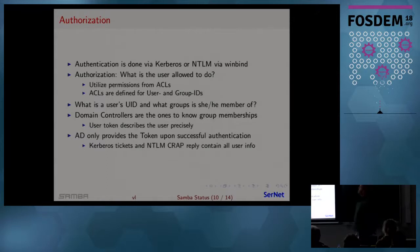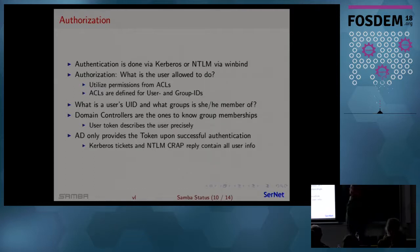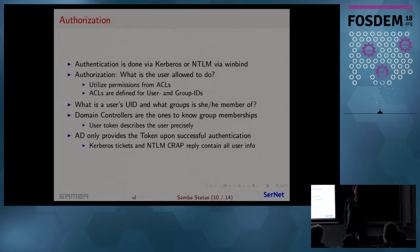Authentication can be done by NTLM — WinBind can do NTLM, and WinBind can also verify Kerberos tickets. What is authorization? What is the user allowed to do? Eventually that's permissions from access control lists in the file system. In normal Unix operations, how do we evaluate ACLs? That's all based on user IDs and group IDs — small 32-bit numbers.